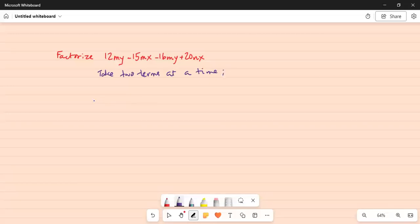Okay, so from the first two terms, 12my, let me write the entire thing, minus 15mx minus 16my plus 20nx.